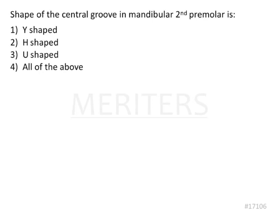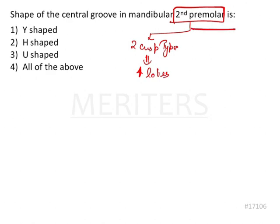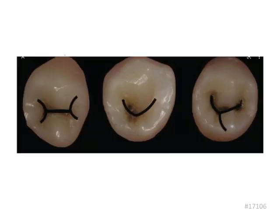The question here is: what is the shape of the central groove in the mandibular second premolar? We know there are two types of the second premolar. One is the two-cusp type, formed by four developmental lobes, and then we have the three-cusp type, formed by five developmental lobes. These are two important things to keep in mind.